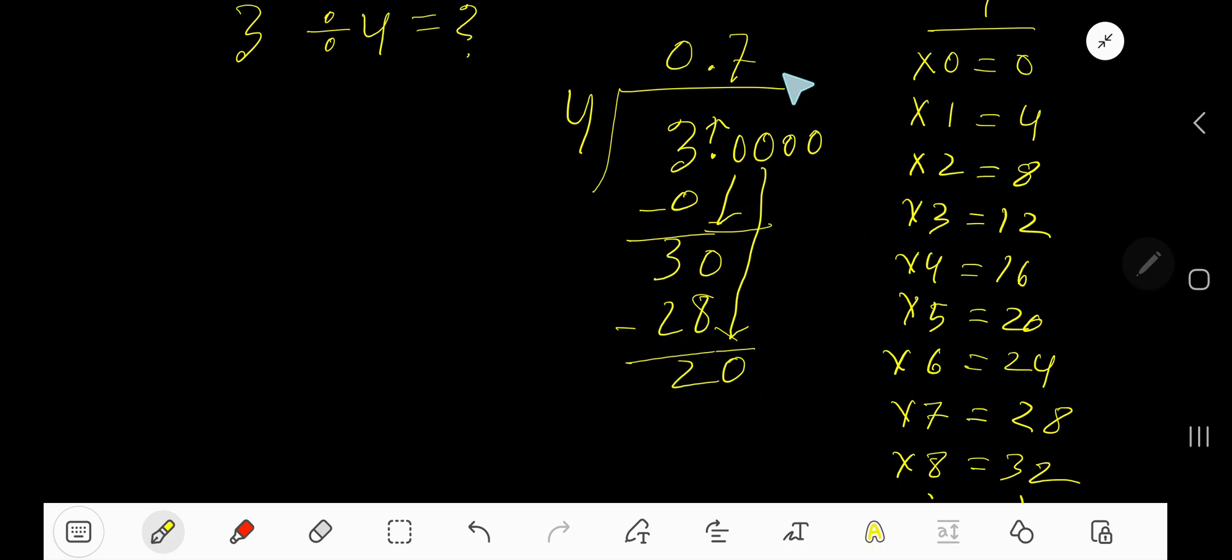4 goes into 20 how many times? 5 times. 5 times 4 is 20. Since our remainder is zero, we are done. The answer is 0.75.